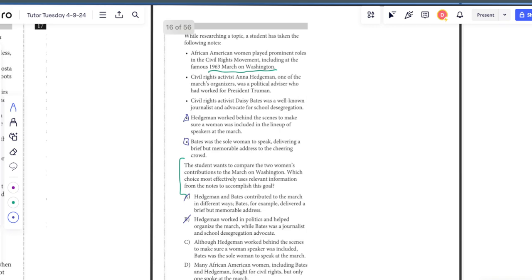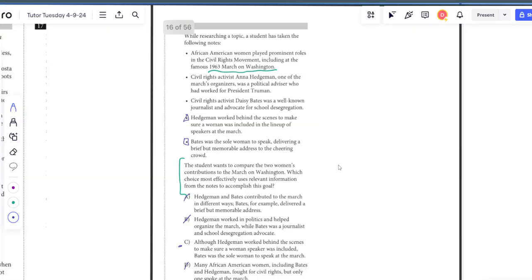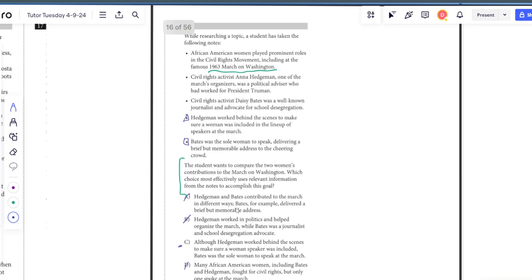We want to compare the two women's contributions. Hedgeman and Bates contributed to the March in different ways. Bates, for example, delivered a brief but memorable address. But that doesn't compare what they did. Although Hedgeman worked behind the scenes to make sure a woman speaker was included, Bates was the sole woman to speak at the March. That one seems like it matches up quite well to me. I'm going to go with C for now. This answer specifically highlights the contributions of both of the women.